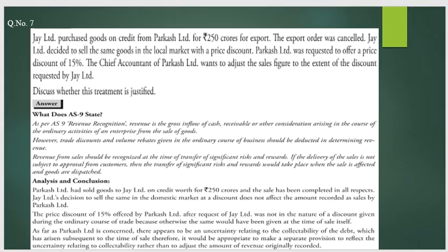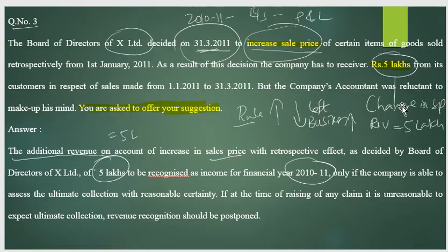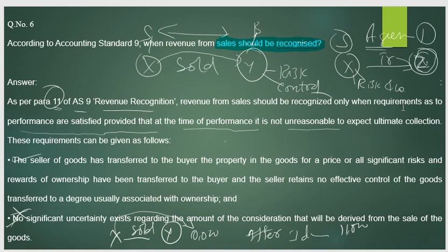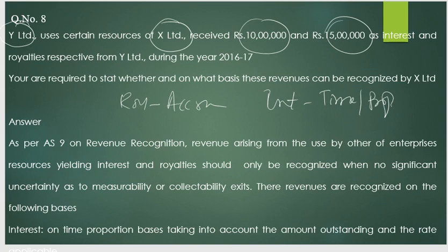To recap: question one on interest and royalty, question two on dividend, question three on retrospective price increase, question four on dealer interest, question five is same as one, question six and seven are theory, and question eight is the same as one and five. Write any questions in the chat box.